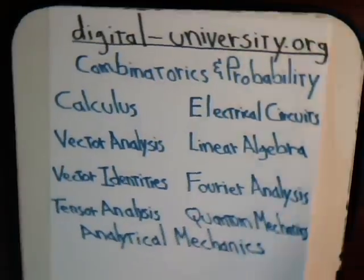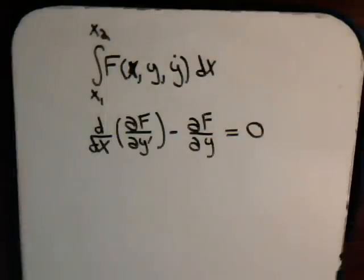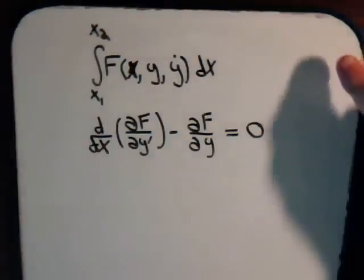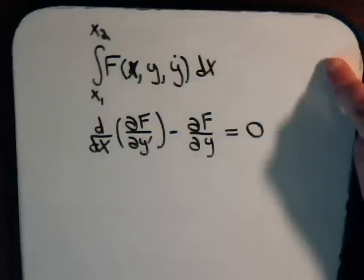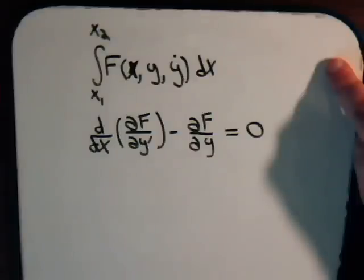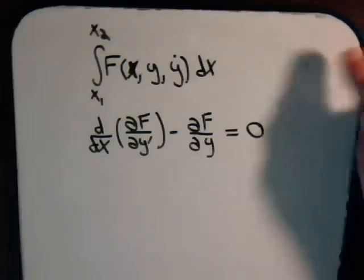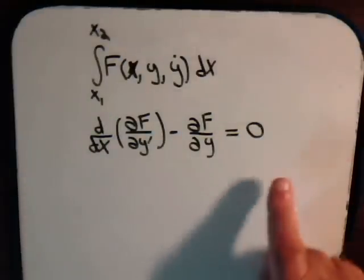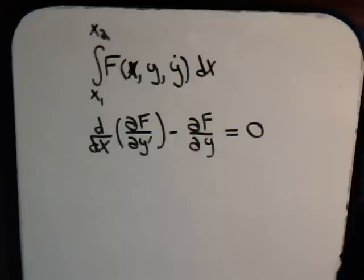In the second video, we considered an integral of a general form, and we said that we wanted to find the stationary function for this integral. There was a corresponding differential equation that we derived, and that was the Euler equation.